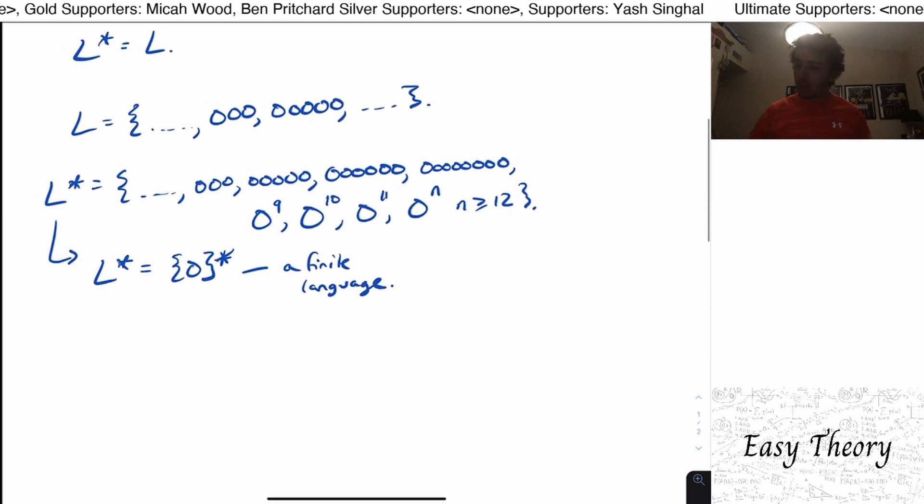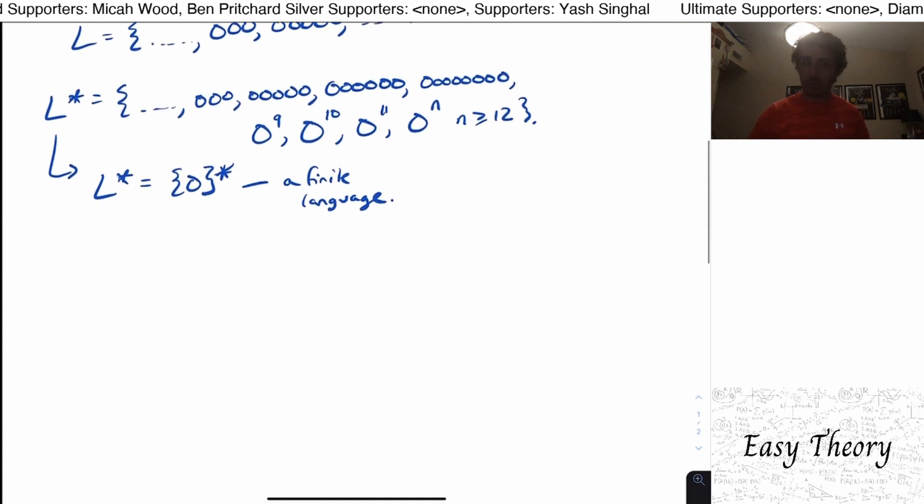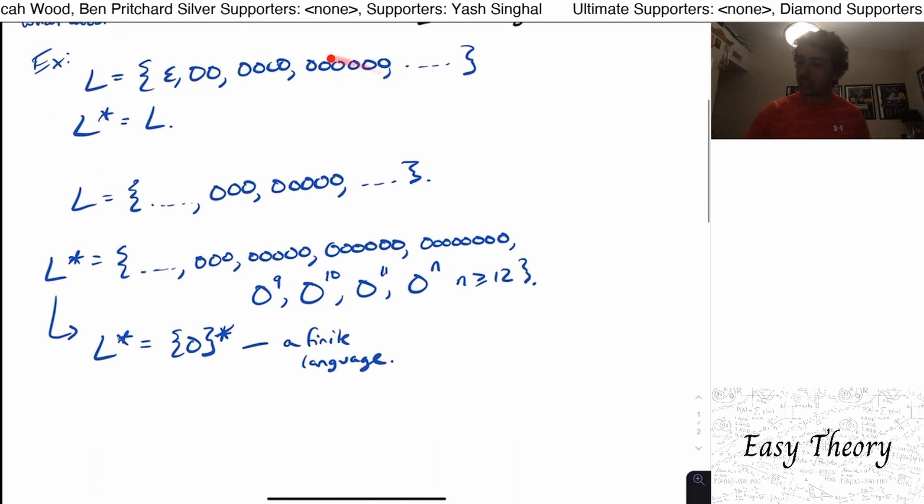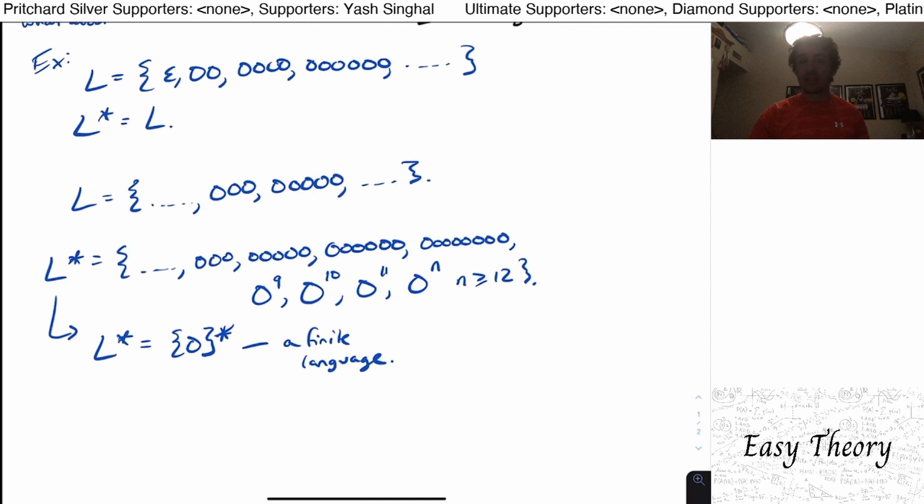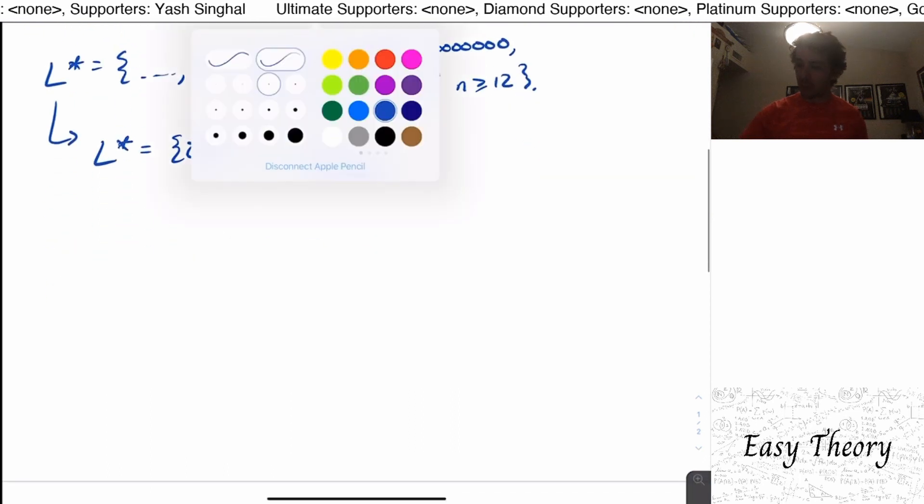So how would we approach this in general? Well, let's suppose that we were in a situation like this one. Then this means that if we look at the lengths of the strings themselves, we will want to know whether two strings are relatively prime.